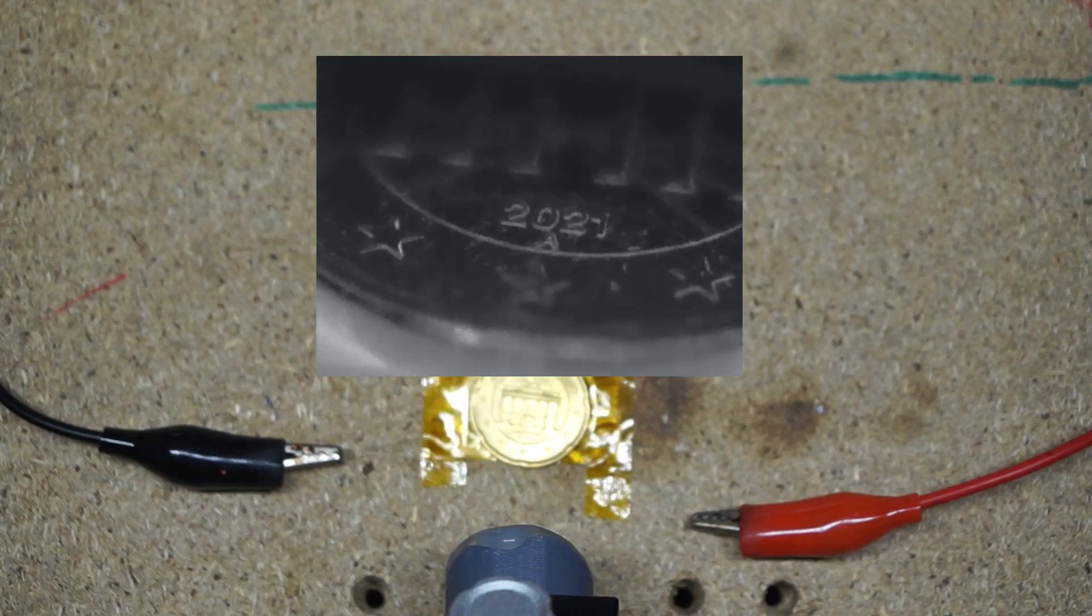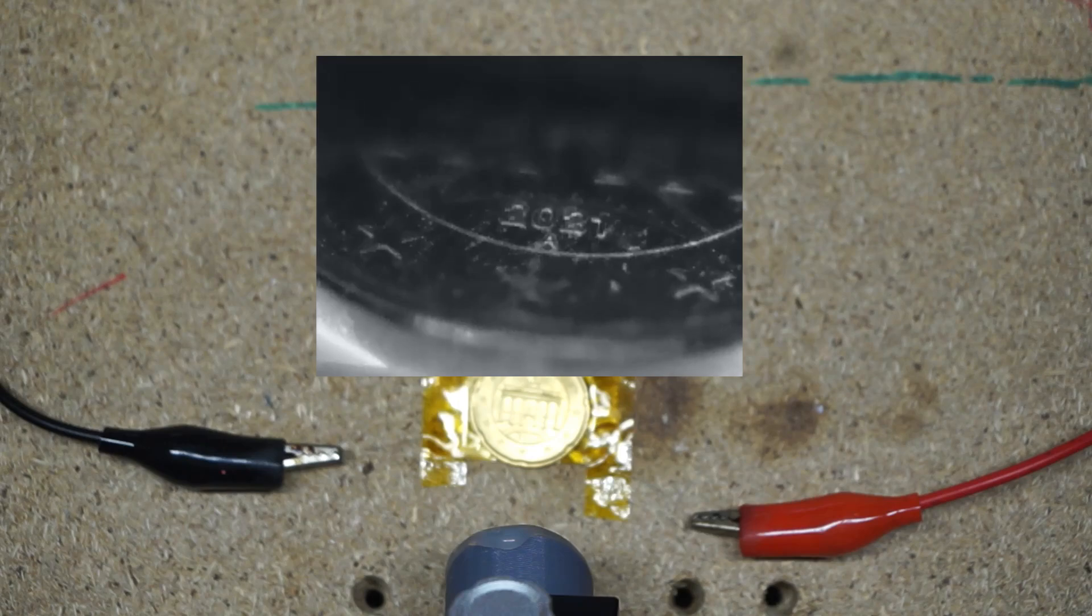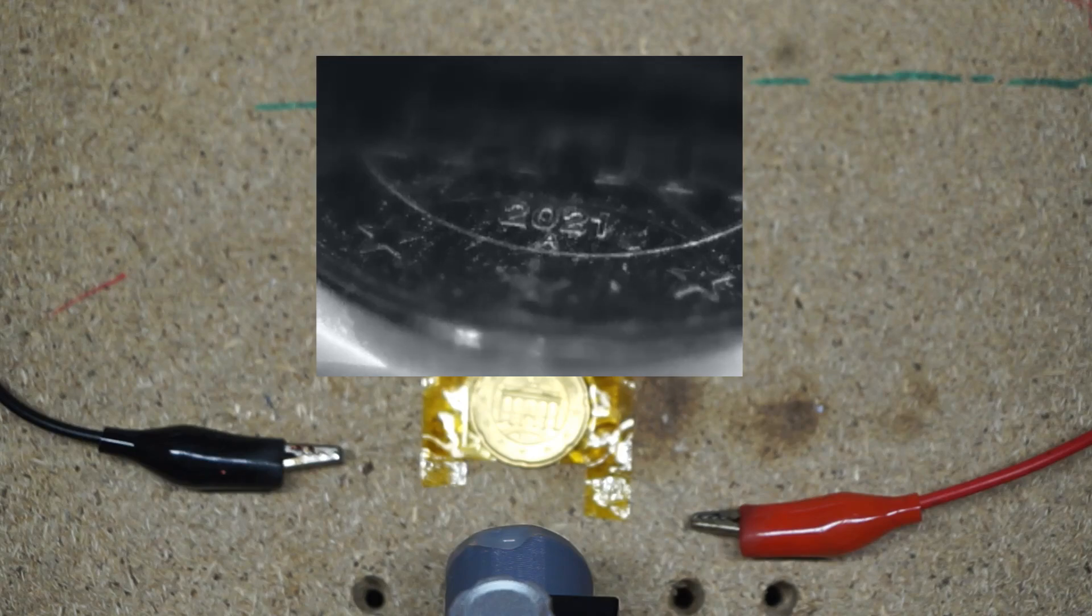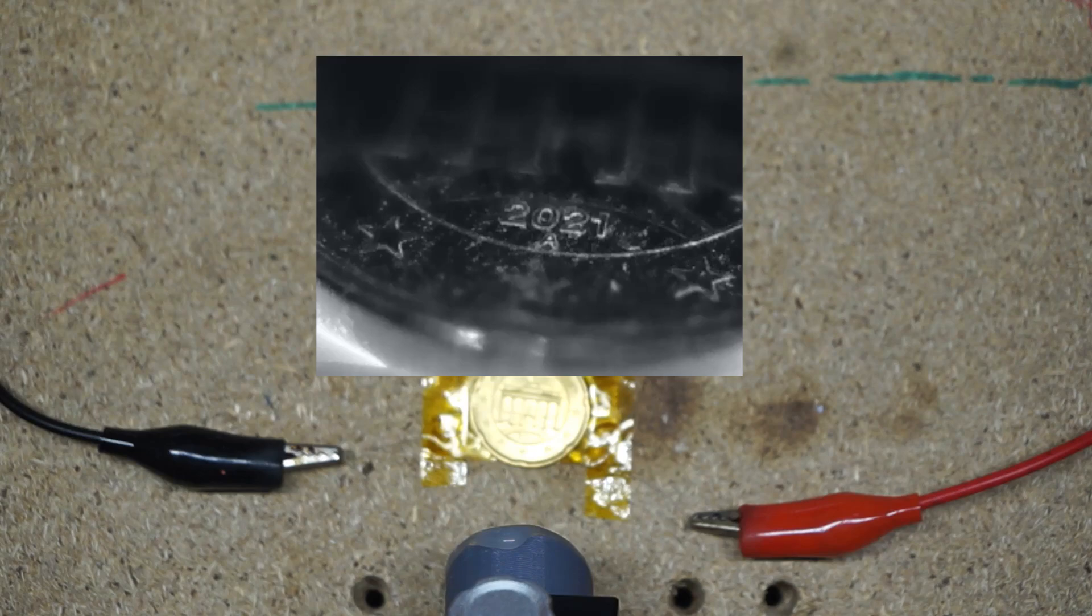Now the coin should slowly be heating up. And while it heats up we should be able to get maybe better contrast. Let's give it a little bit more power. 10 volts at 0.4 amps.